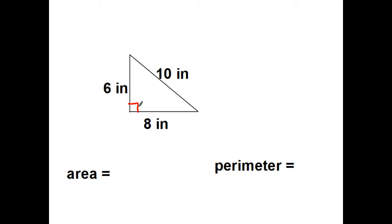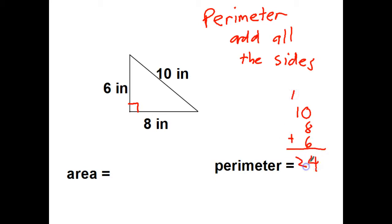The formula for perimeter is nice and easy. Anytime we're doing perimeter all I have to do is add all the sides. So I can see I have a 10 and 8 and a 6. So 10 plus 8 plus 6, 14, carry my 1, 24 inches. And my unit is just going to be whatever we have here because it's going all the way around.